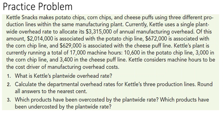Starting with number one: what is Kettle's plant-wide overhead rate? The formula is total estimated manufacturing costs divided by the total estimated allocation base. In this case, that's $3,315,000, and the allocation base mentioned is machine hours — the company runs 17,000 machine hours.